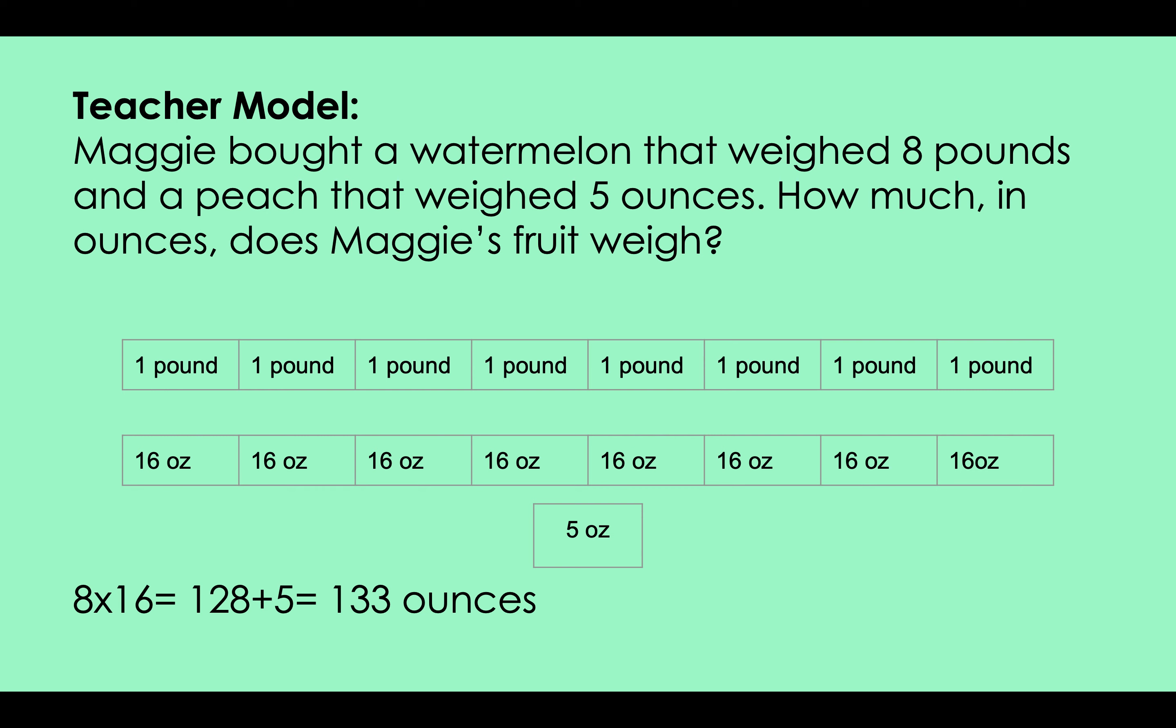So I need to turn my pounds into ounces. I took my one pound and I know that there are 16 ounces in one pound, so I made my bar model. If you look at the bottom, one pound equals 16 ounces. I now have eight groups of 16 ounces which is 128 ounces, but I can't forget about that five ounce peach she has, so I need to add in those five extra ounces.